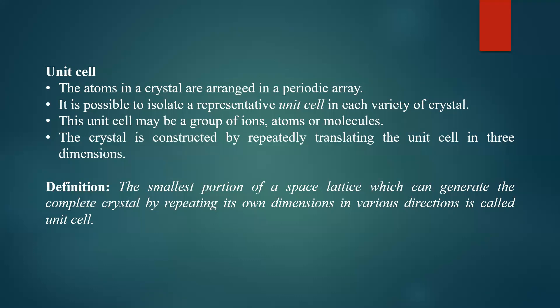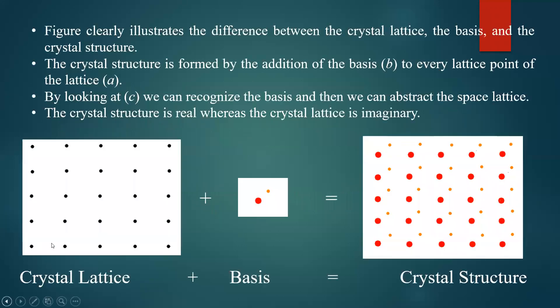We repeat the smallest portion of the space lattice — the fundamental portion — and repetition of that gives the total crystal structure. In the crystal lattice diagram, a rectangle is a unit cell — the smallest portion containing four lattice points. Repetition of this rectangle in various directions gives the total crystal lattice. Similarly, a box with an atom at each corner is a unit cell, and repetition of unit cells in various directions gives the crystal structure.